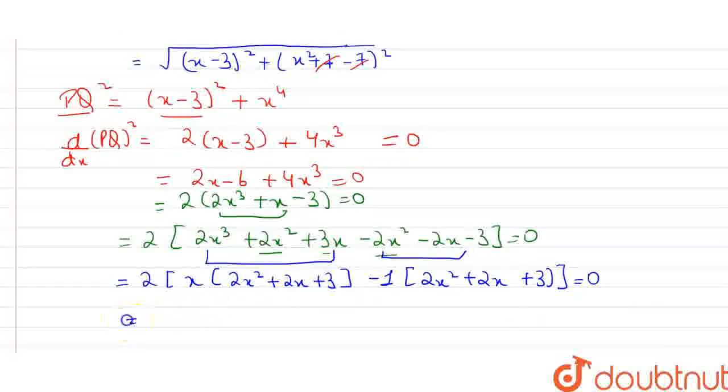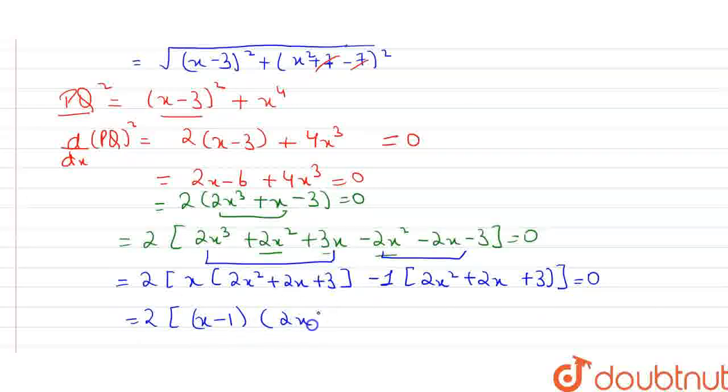Now this is equal to 2 outside (x minus 1) into (2x square plus 2x plus 3) equals 0.